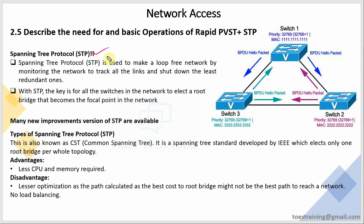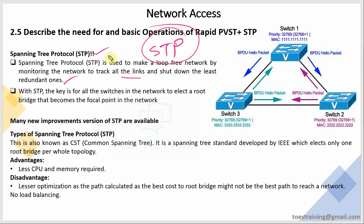What is Spanning Tree Protocol (STP)? Spanning tree protocol is used to make a loop-free network by monitoring the network to track all links and shut down the least redundant one. STP protocol is used to establish a loop-free network. It monitors all connected links and puts the links that are not necessary into a blocking or shutdown stage. That is the job of STP protocol.